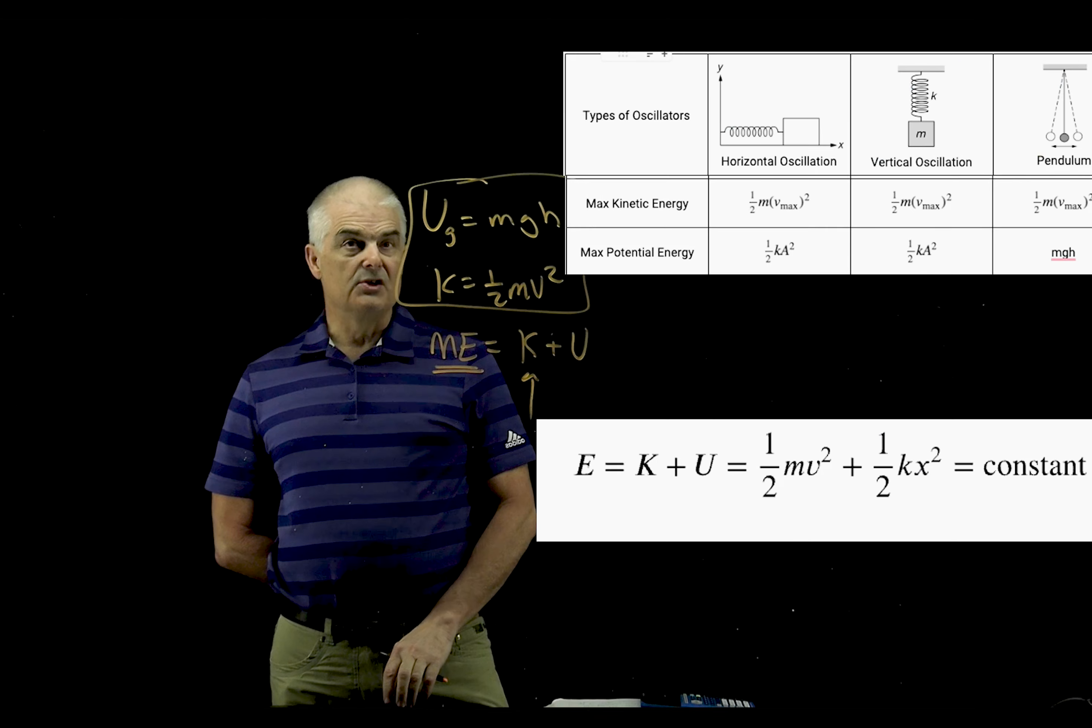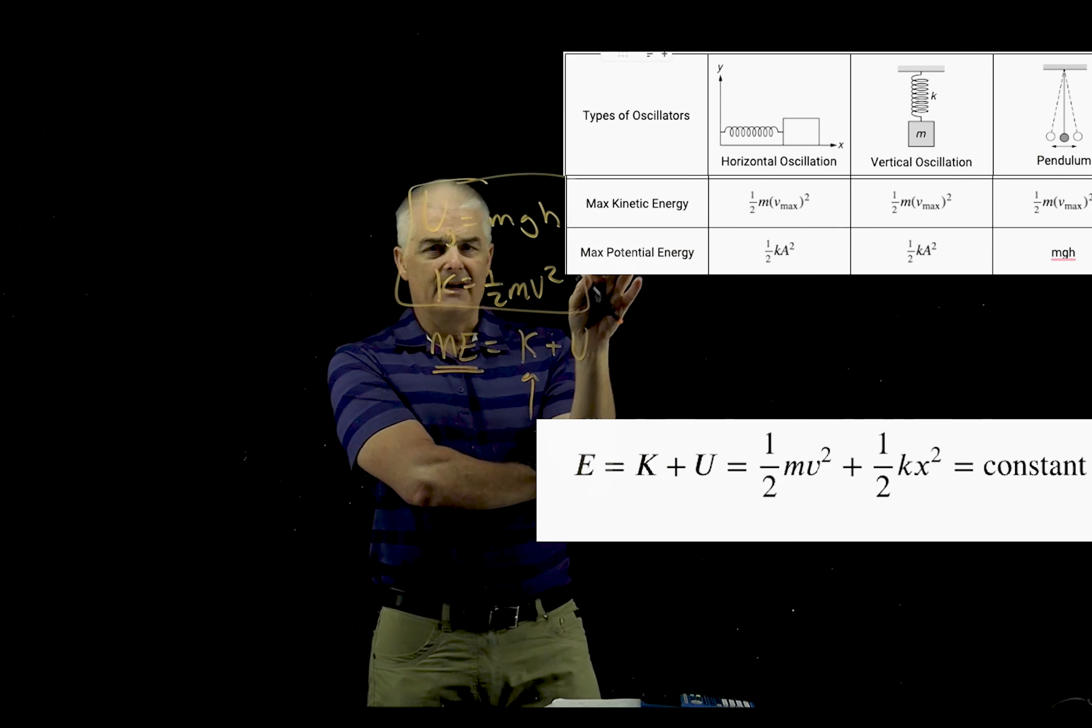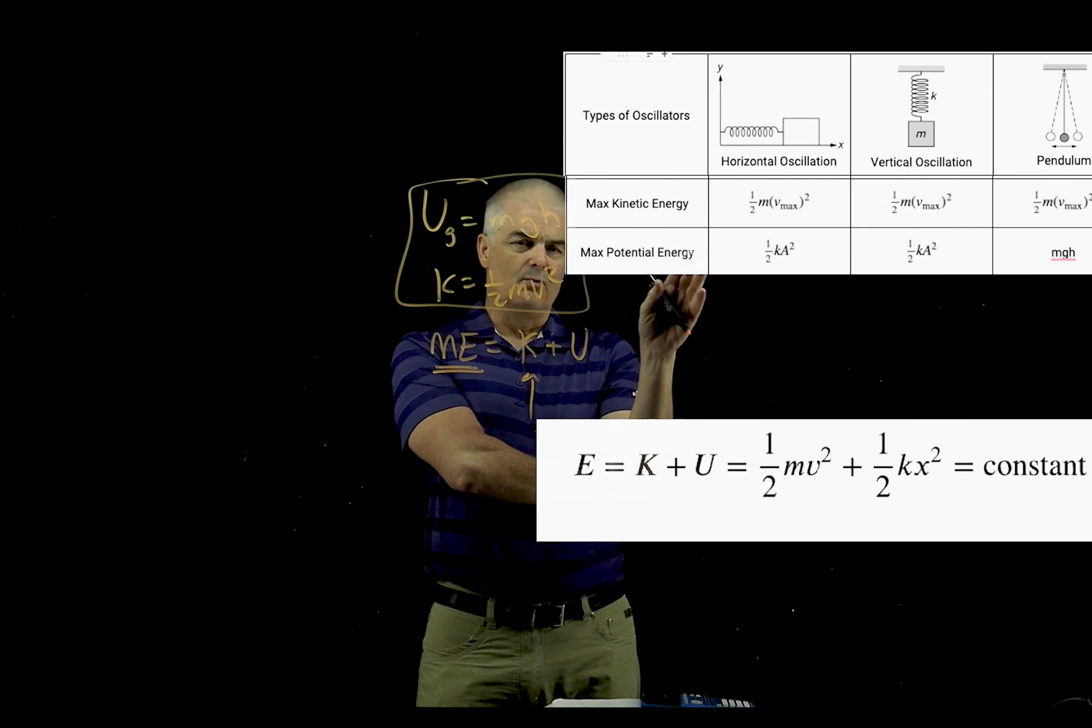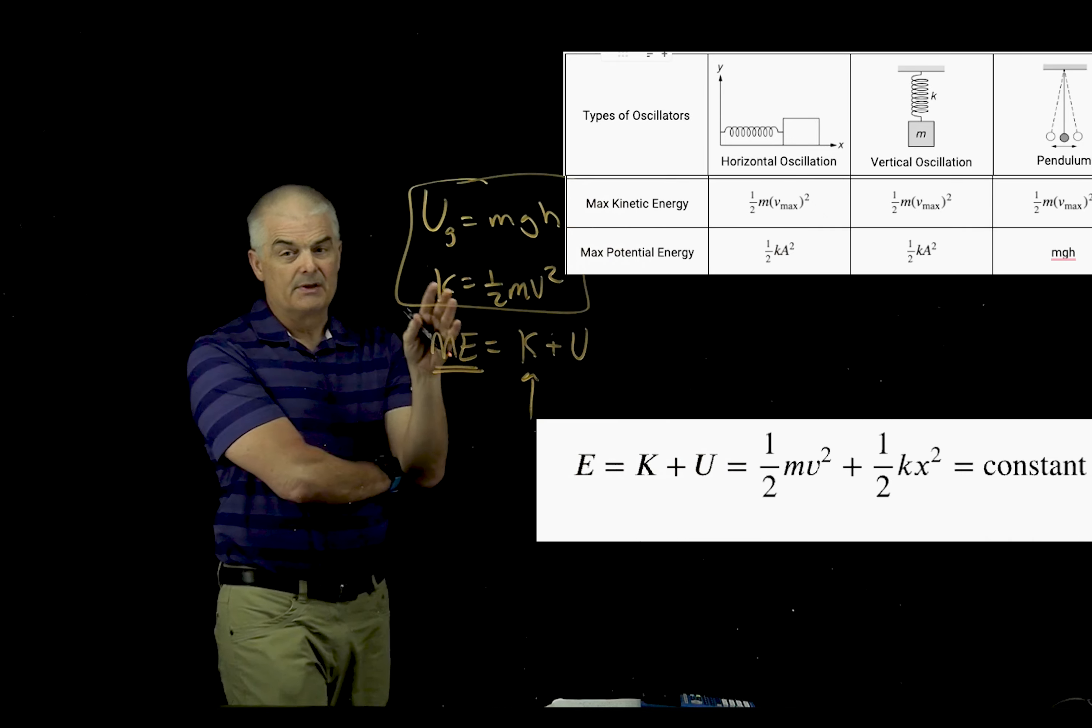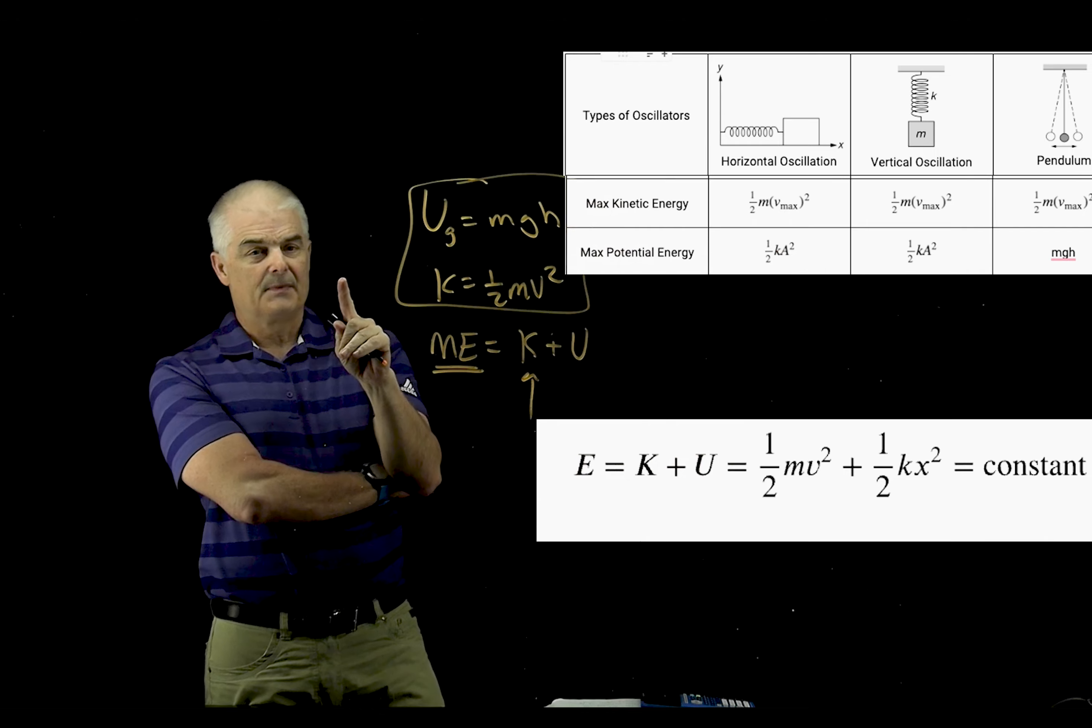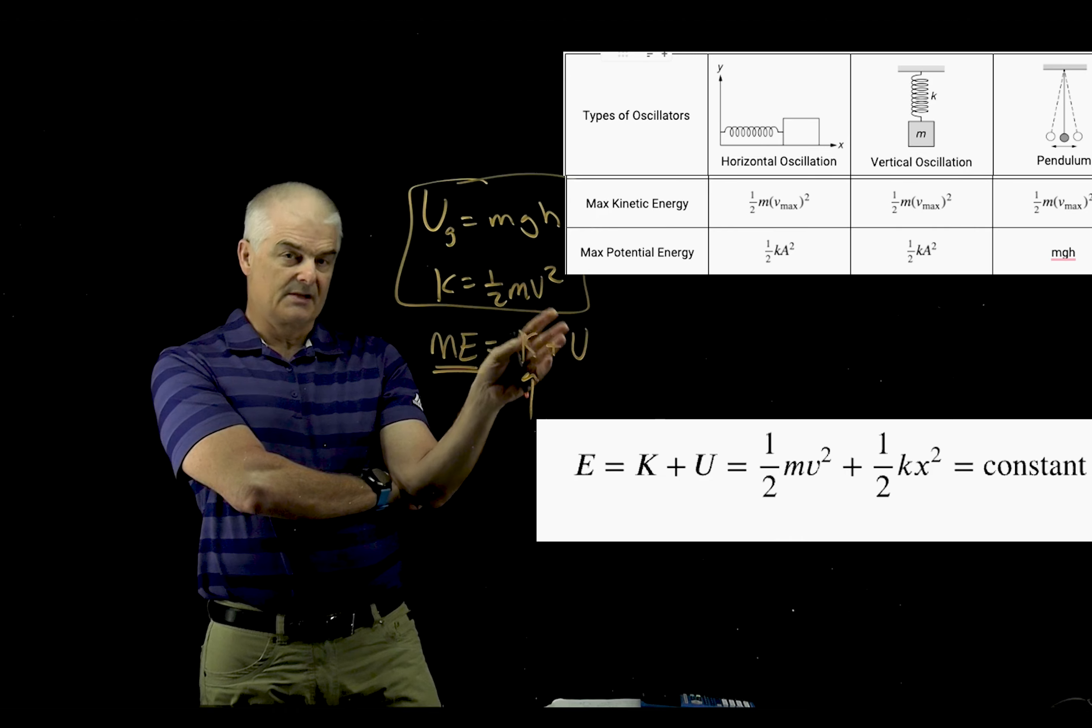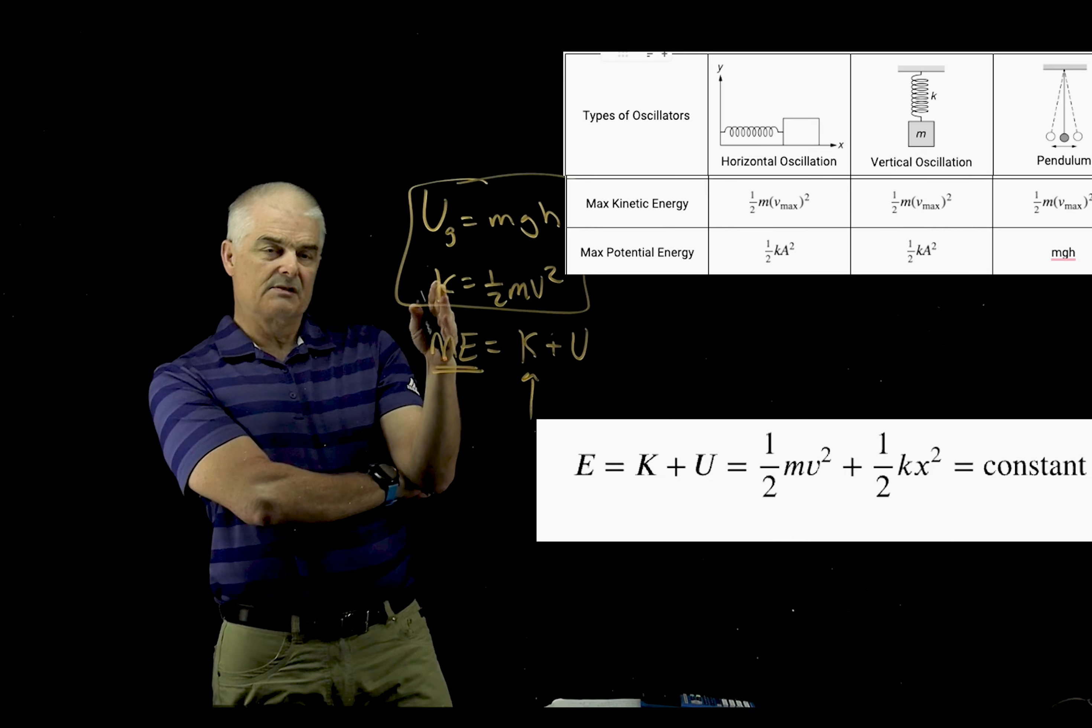From our master equation sheet, we've got three kinds of oscillators: horizontal, vertical, and pendulum. If you look at the kinetic energy equation, the max kinetic energy is one half mv squared for all three, but the v max. But the potential energy is a little different. It's going to be one half k a squared in the first one and the second one, but the third one is mgh. So depending on what type of system you have, you're going to be able to determine what type of energy you have.